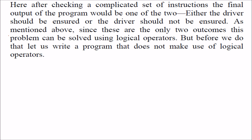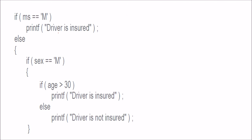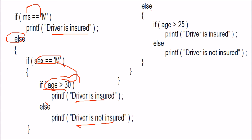How can we use this? First, we will try to show it without using logical operators. We have a car, this is your sex, this is your marital status, and you have age. Just enter the age as integer D, and sex and marital status as characters. Now, if the marital status is married, we say driver is insured. Otherwise, if sex is male, then we check for age greater than 30. If it is greater than 30, he is male and we say driver is insured. If not, driver is not insured. We can have one more condition — else if age is greater than 25, driver is insured. Otherwise, driver is not insured because the sex has to be female.